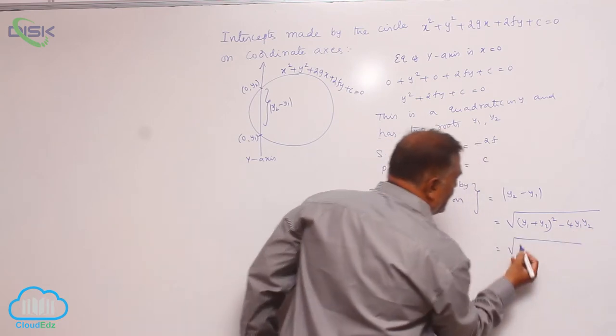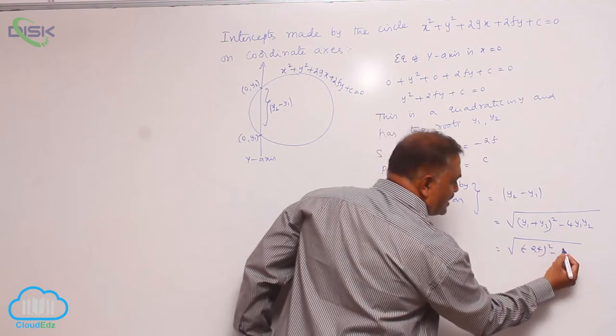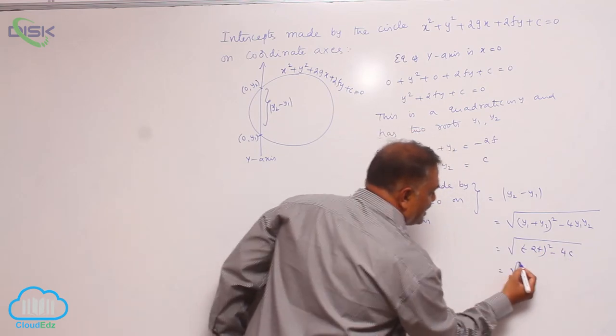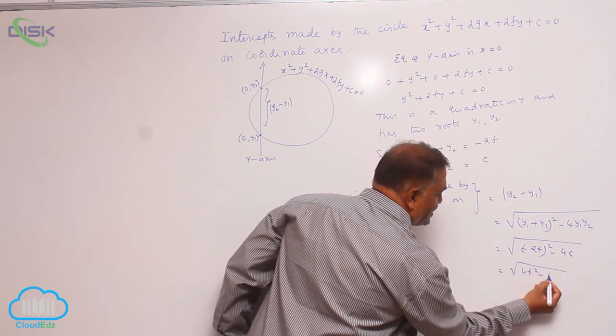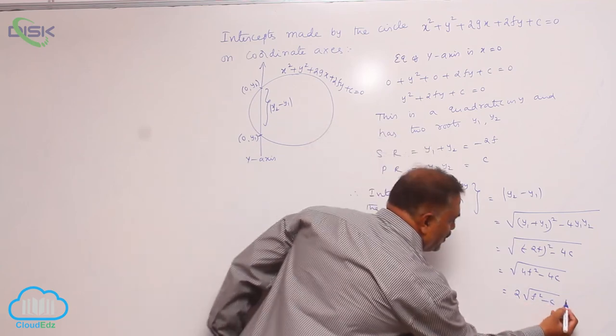This is minus 2f whole square minus 4c. This is 4f square minus 4c. It is 2 times square root of f square minus c units.